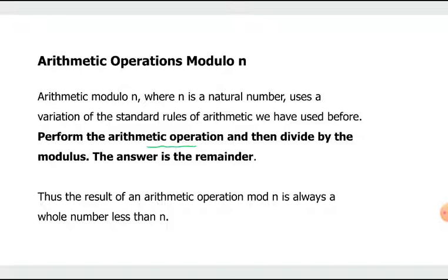An important note: to check if your answer is correct, the result of your arithmetic operation in modulo n must always be less than n. So for example, if you're doing arithmetic in modulo 7, your answers should be less than 7 — so it can be 0, 1, 2, up to 6.